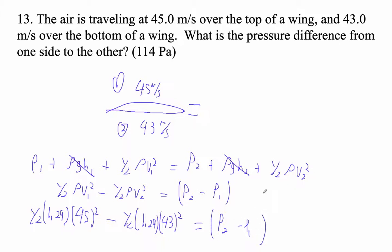All right. I can do this: 0.5 times 1.29 times the quantity 45 squared minus 43 squared. And we get 113.52, which is the answer. That's Pascals. Ta-da!